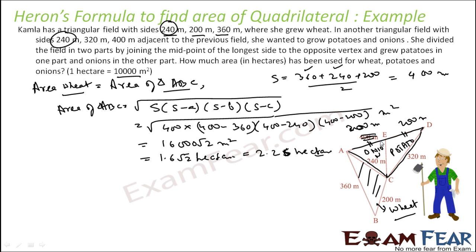If you notice, E is the midpoint of the longest side AD. By the midpoint theorem, the area of the onion triangle (AEC) will be equal to the area of the potato triangle (CED). Both triangles have the same height and the same base length, so their areas are equal. Therefore, the area of onion cultivation equals the area of potato cultivation.